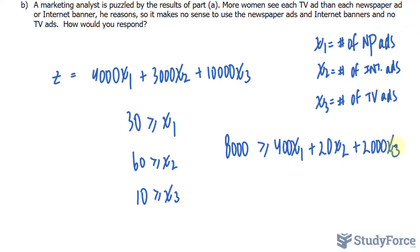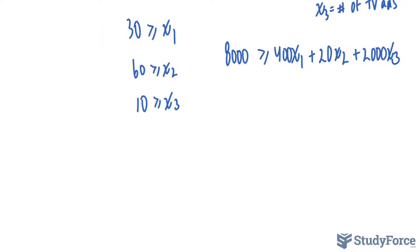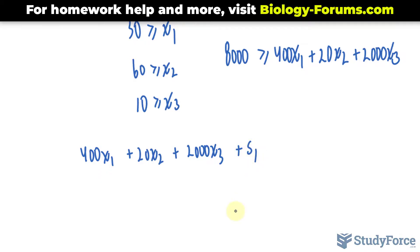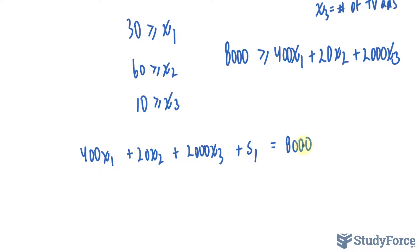We have four constraints and the objective function. The next thing is to convert these constraints into equations by introducing slack variables. For example, taking the budget constraint, to make it into an equation I'll add a slack variable: 400 X sub 1 plus 20 X sub 2 plus 2,000 X sub 3 plus S sub 1 equals 8,000. For a more extensive discussion on why we introduce slack variables, make sure to rewatch question 1 in this series.